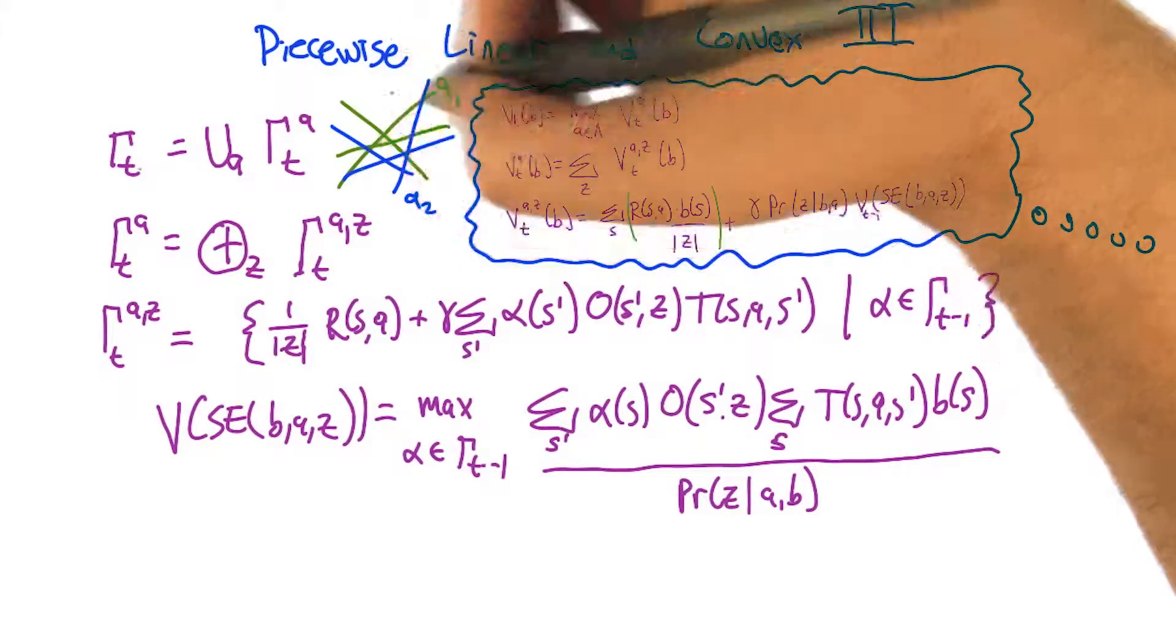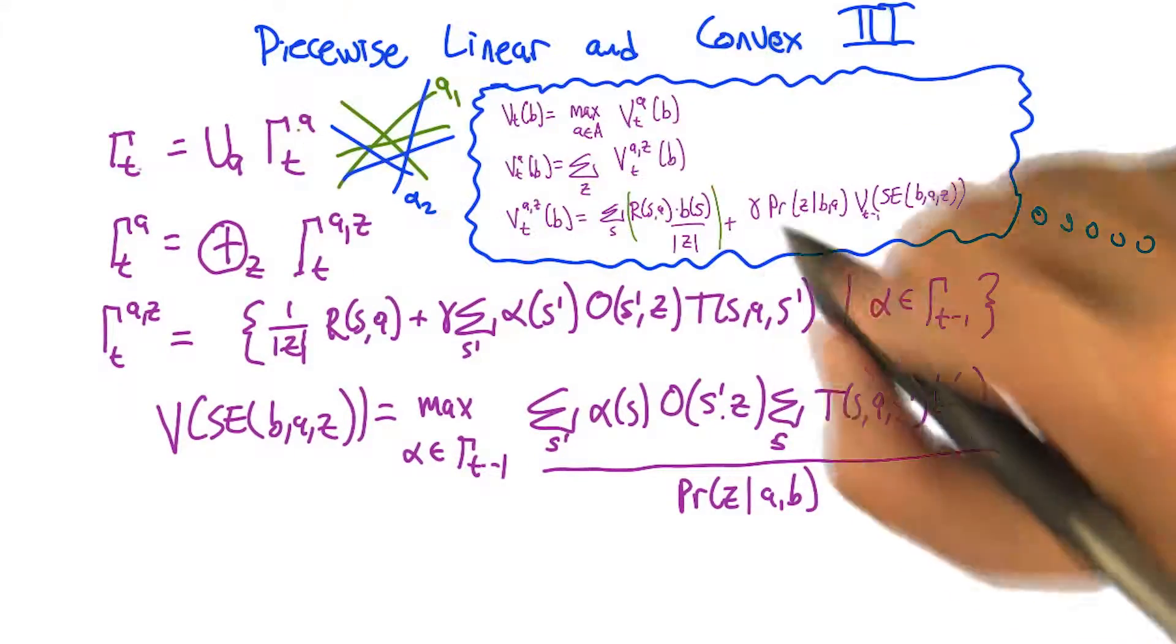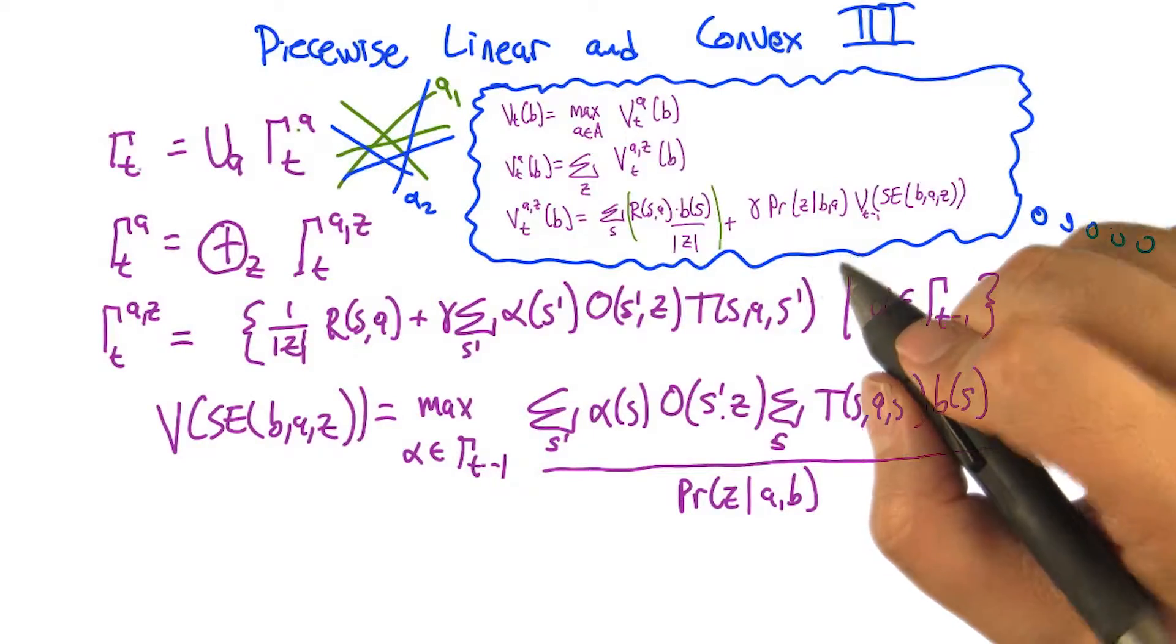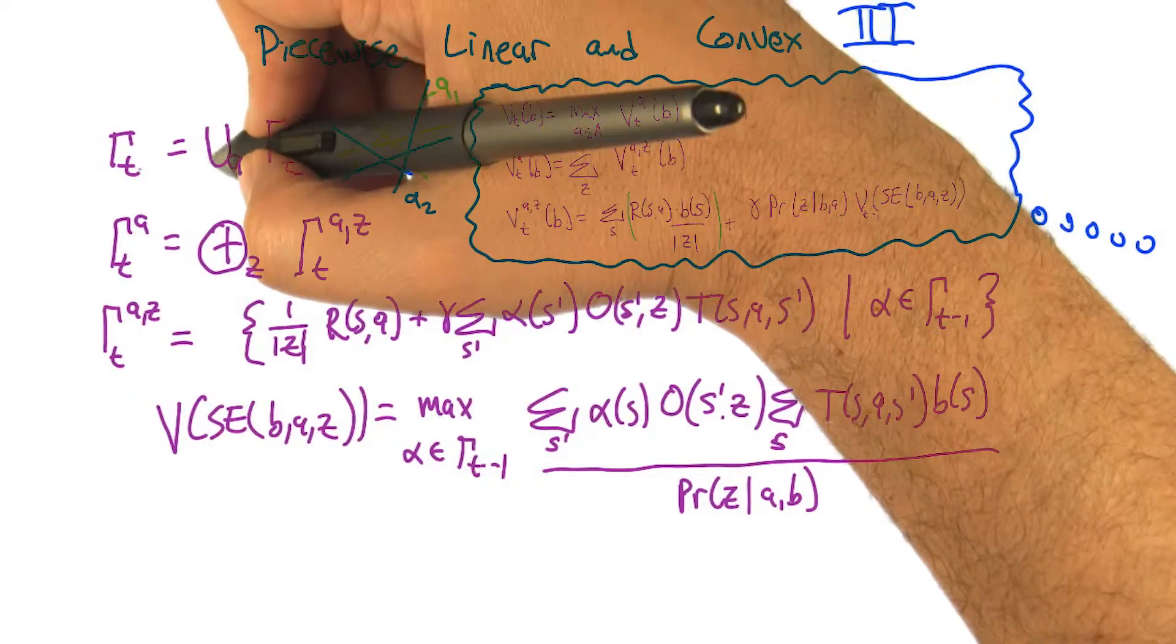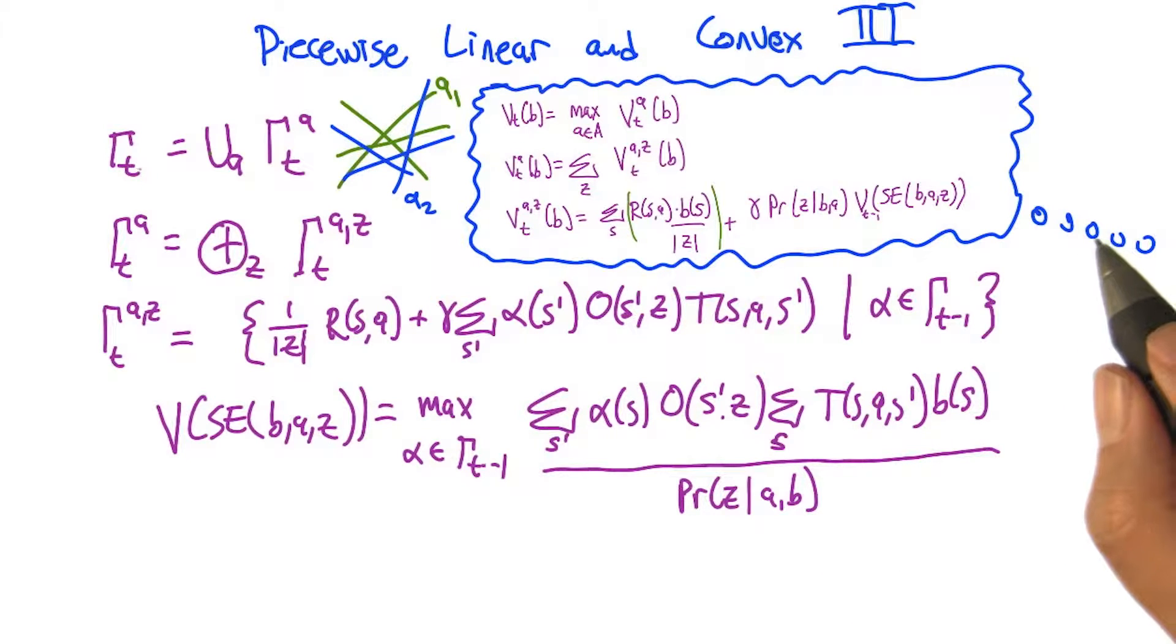We can just pool all the vectors together. So this is just a union over all actions of the bag of vectors for each of those actions. This is a way of writing max as an operation over sets of vectors. Sure, I believe that. That all makes sense.